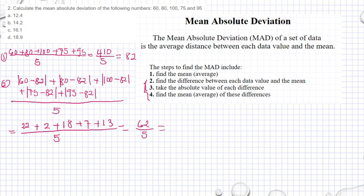I got 12.4. So my mean absolute deviation is 12.4. In my next video, I am going to try to explain also what it means.